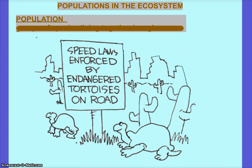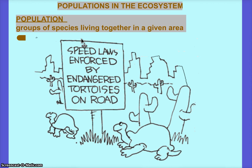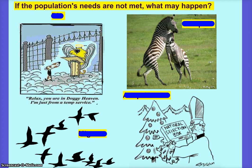All right, review. What's the definition of a population? A group of the same species living in the same place at the same time is your population. We're going to focus on populations. What happens if this class's population's needs are not met? What can happen to us? We could definitely die, which is not good. What else? We could fight.